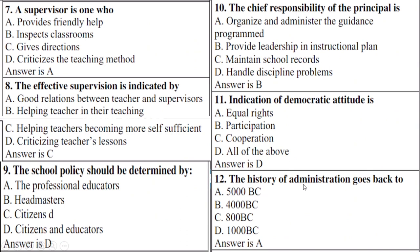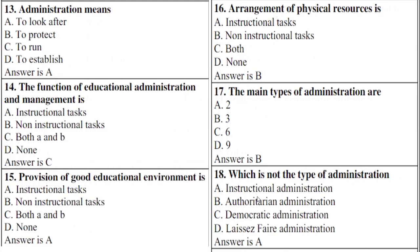The history of administration goes back to — right option is A: five thousand BC. Administration means — right option is A: to look after.